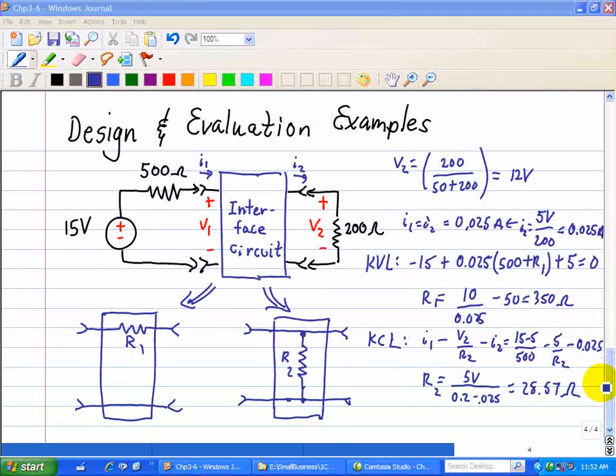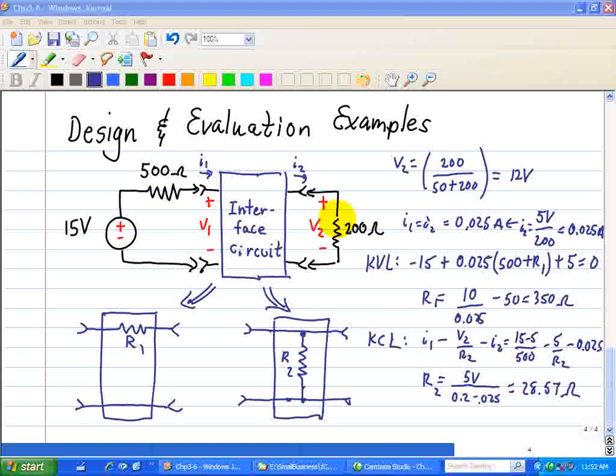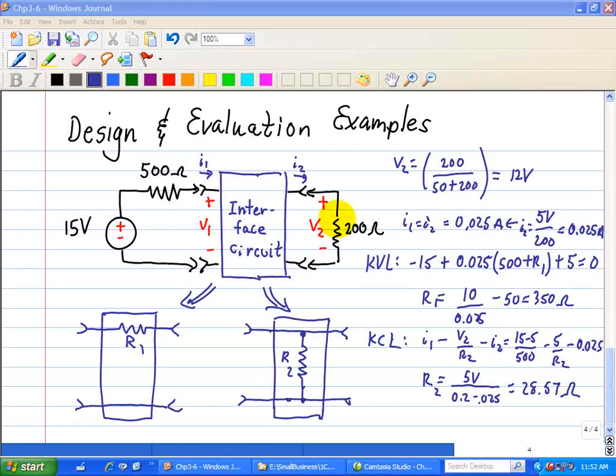So what we have are two alternative designs, both of which will deliver 5 volts, or V2, across the 200 ohm load. However, in practice, engineers use additional factors to evaluate alternatives that meet the same design goal.